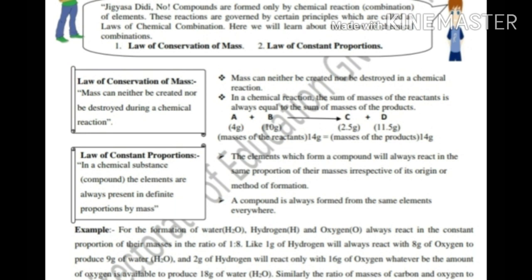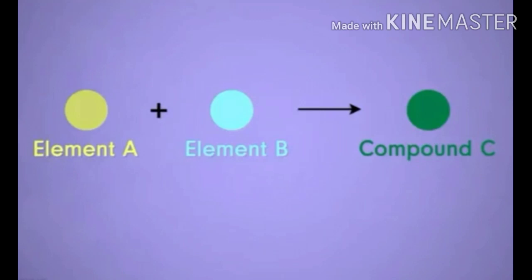First we will see law of conservation of mass. We will understand this better by an example where element A reacts with element B to form compound C. For example, element A is 2 grams and element B is 3 grams.